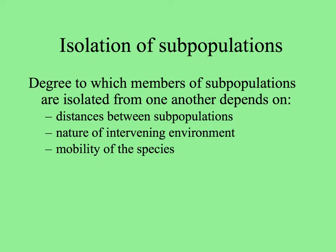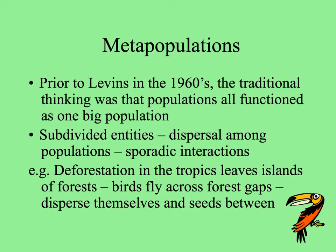The degree to which members of subpopulations are isolated from others depends on the distance between those subpopulations, the nature of the matrix or intervening environment, and also the mobility of the species. Before Levins proposed the existence of metapopulations in the 1960s, populations were envisioned as all functioning as one big population. But he recognized that they are really subdivided, with sporadic dispersal among subpopulations.